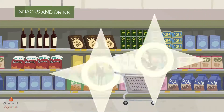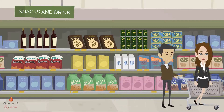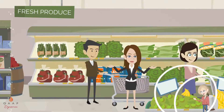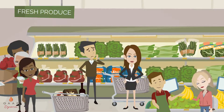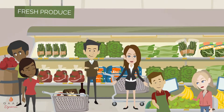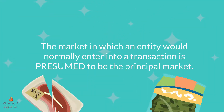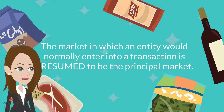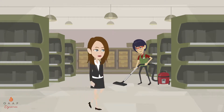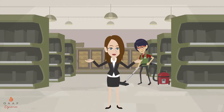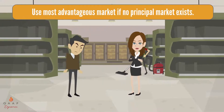Fair value measurements assume that the transaction to sell the asset or transfer the liability occurs in the principal market. The principal market is the market with the greatest volume and level of activity that can be accessed by the entity selling the asset or transferring the liability. There is a presumption that, in the absence of contrary evidence, the market in which an entity would normally enter into a transaction is presumed to be the principal market. If no principal market exists, then, and only then, would the most advantageous market be appropriate.